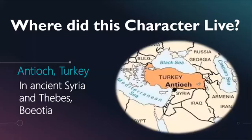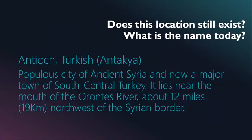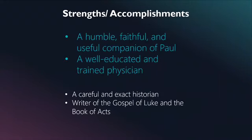His nationality was Greek. Where did this character live? Antioch, Turkey, in ancient Syria and Thebes. Does this location still exist? Yes — it's Antioch, a populous city of ancient Syria and now a major town of south-central Turkey. It lies near the mouth of the Orontes River, about 12 miles northwest of the Syrian border.